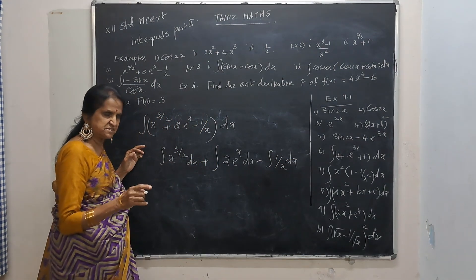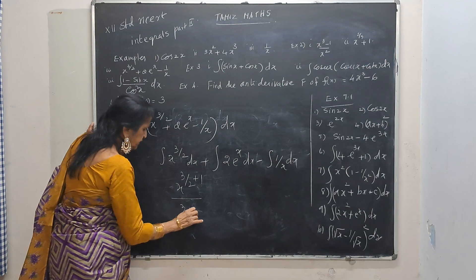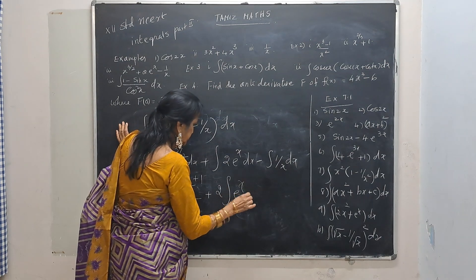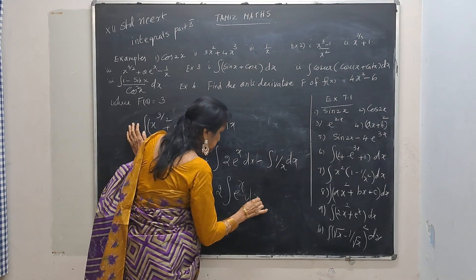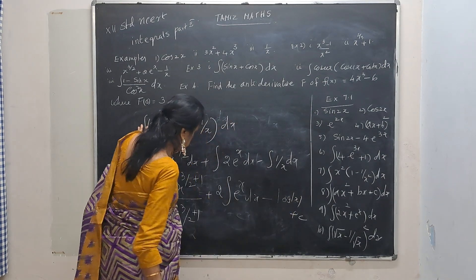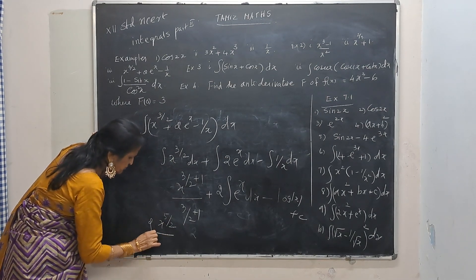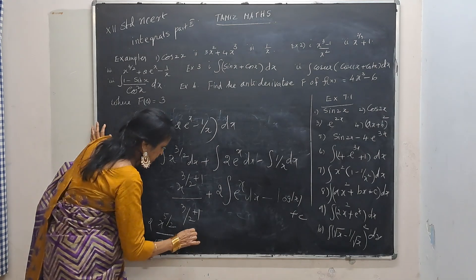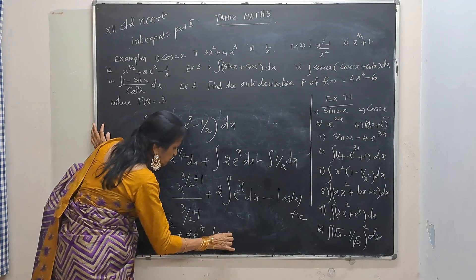You can put the last constant c at the end — that is enough. So this is x to the power 3 by 2 plus 1, divided by 3 by 2 plus 1. Take out 2 outside, then integral of e to the power x dx — that's what we started with: e to the power x only, so 2e to the power x. And minus: 1 by x gives log mod x plus c. So the answer is x to the power 5 by 2 divided by 5 by 2, plus 2e to the power x, minus log mod x, plus c.